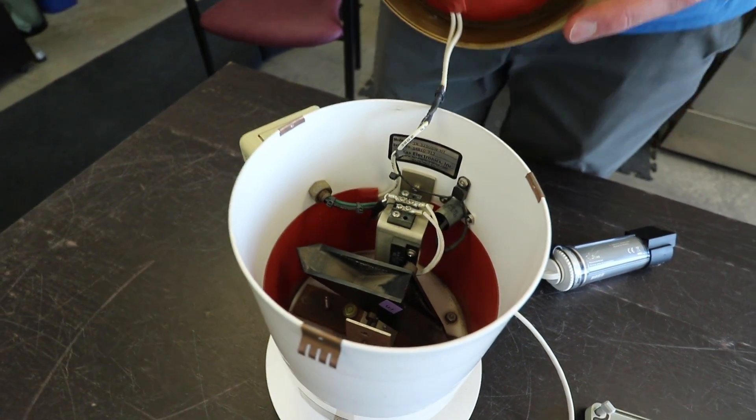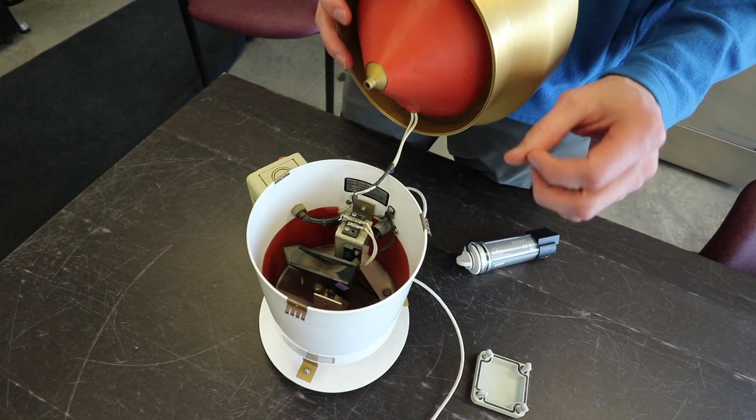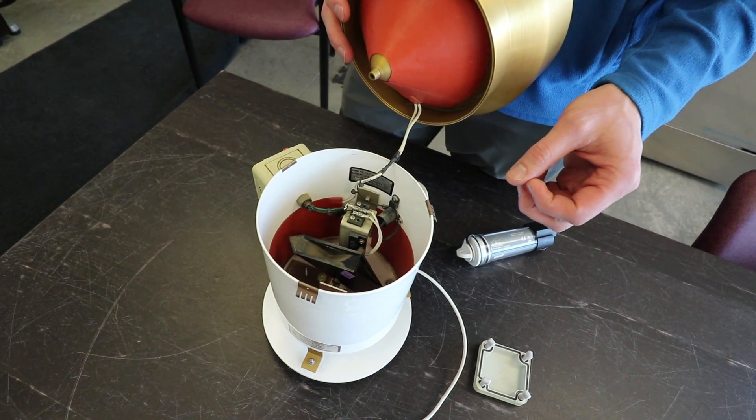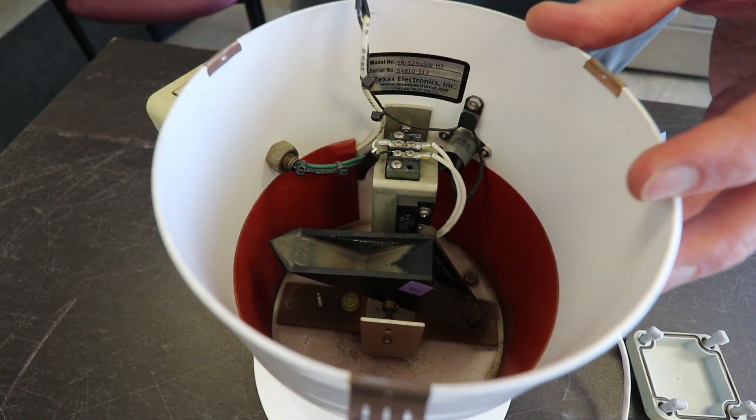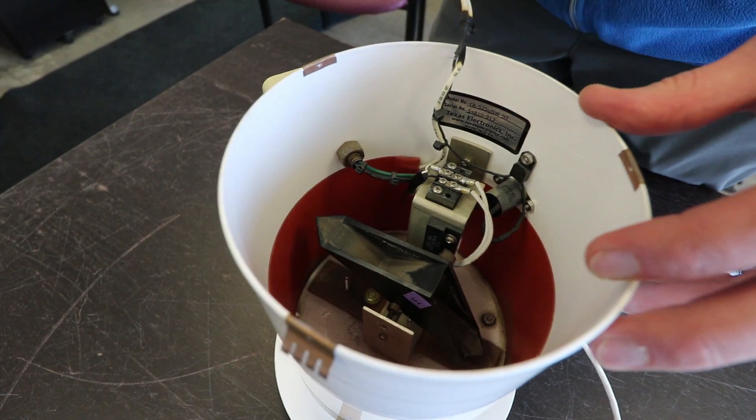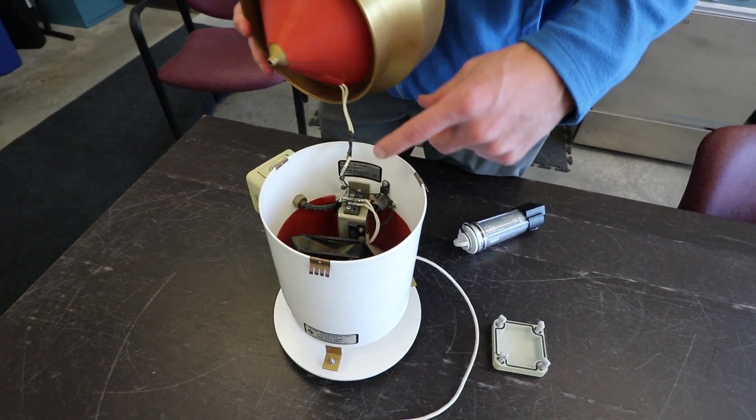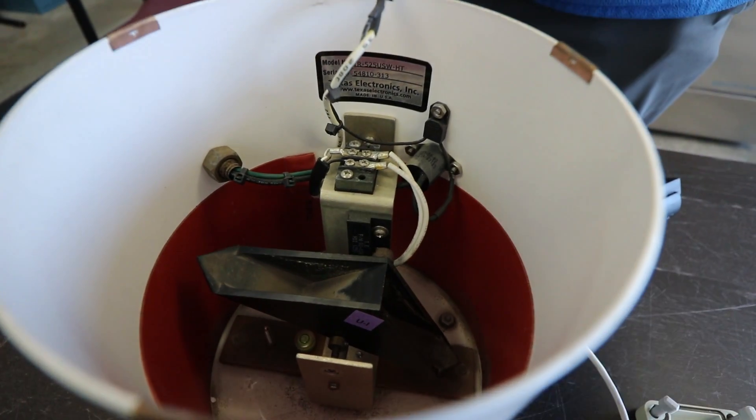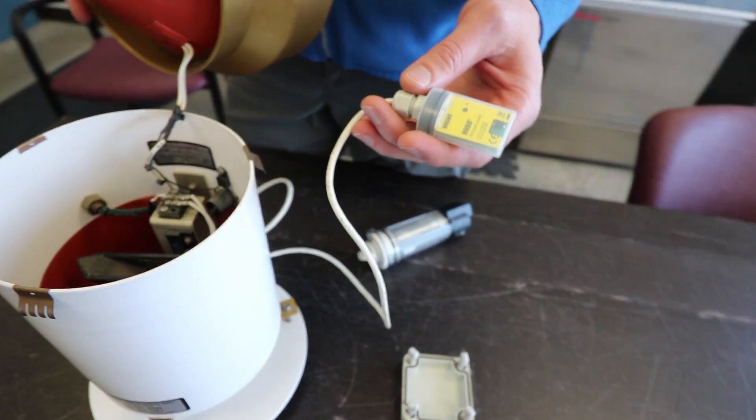Every time the tipping bucket tips, a magnet goes by a reed switch which creates a momentary contact closure, and that contact closure signal comes out through these two white wires and travels down this wire into a pendant data logger.